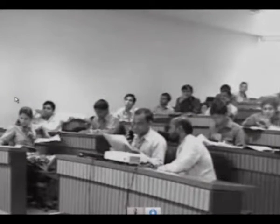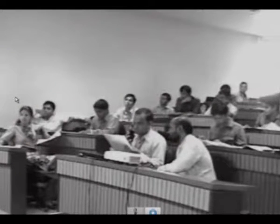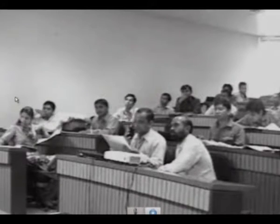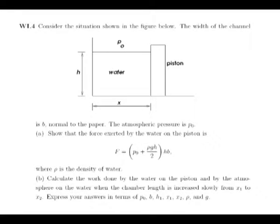The work done by water on the piston — as per our calculation it will be p0 plus rho*g*h over 2, multiplied by h*b, multiplied by x2 minus x1. You have to be careful here: as x varies, h varies, so you have to write h as a function of x. The force is actually a function of x, so when you are integrating please substitute h as a function of x and then integrate. Do not take the force as constant throughout.